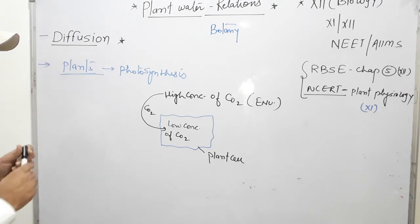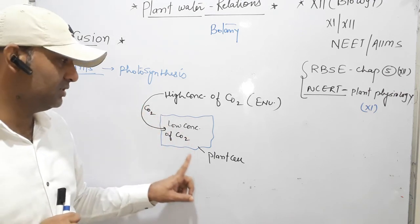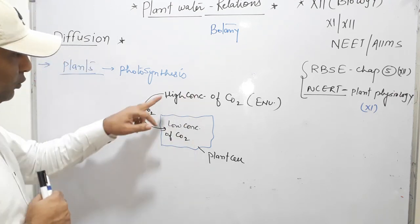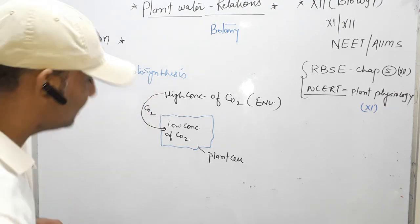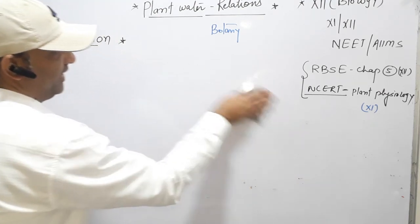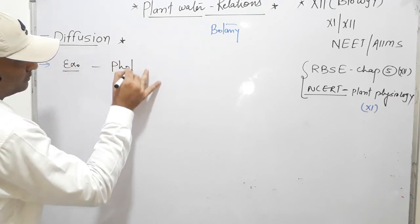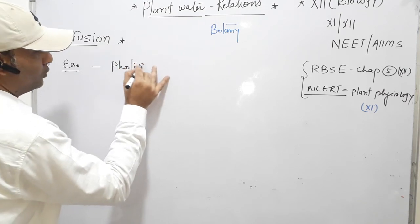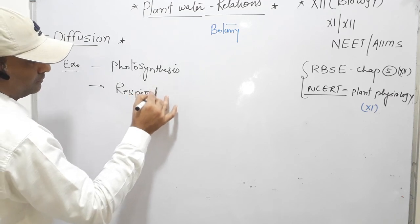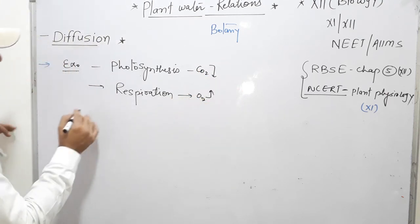So the diffusion process is completed for the photosynthesis example. The plant contains low concentration of CO2, and when CO2 concentration in the environment is high, it moves from outside to inside by diffusion. In respiration, CO2 is released and oxygen is released into the environment — that is the second and third example of diffusion in plants.